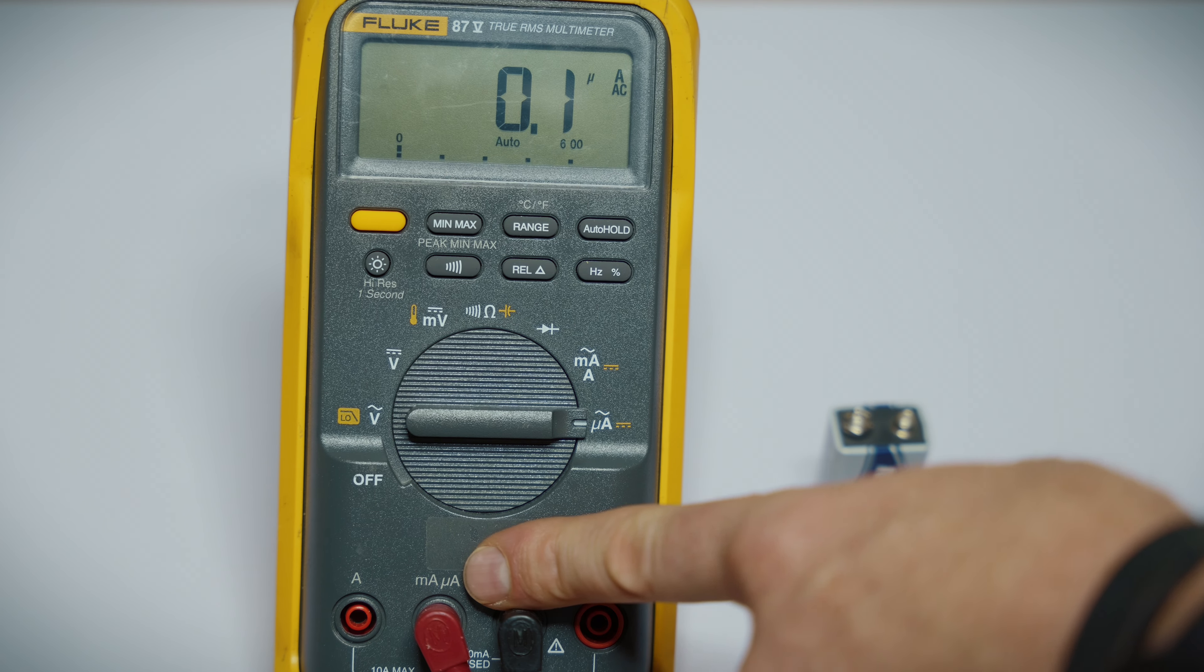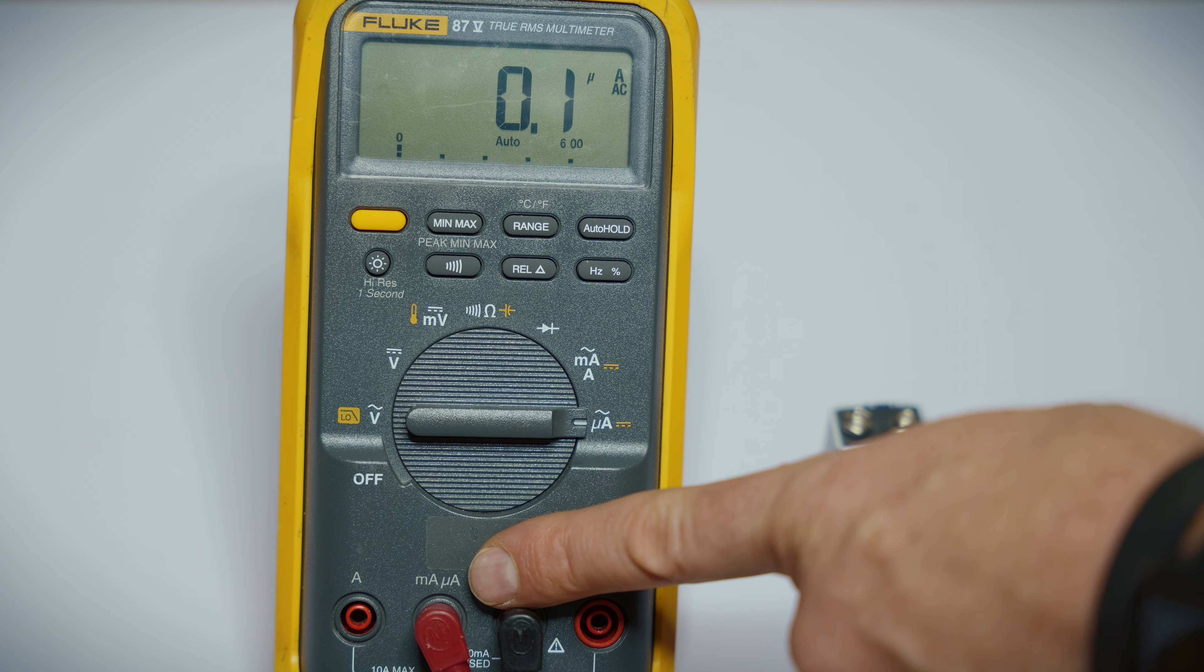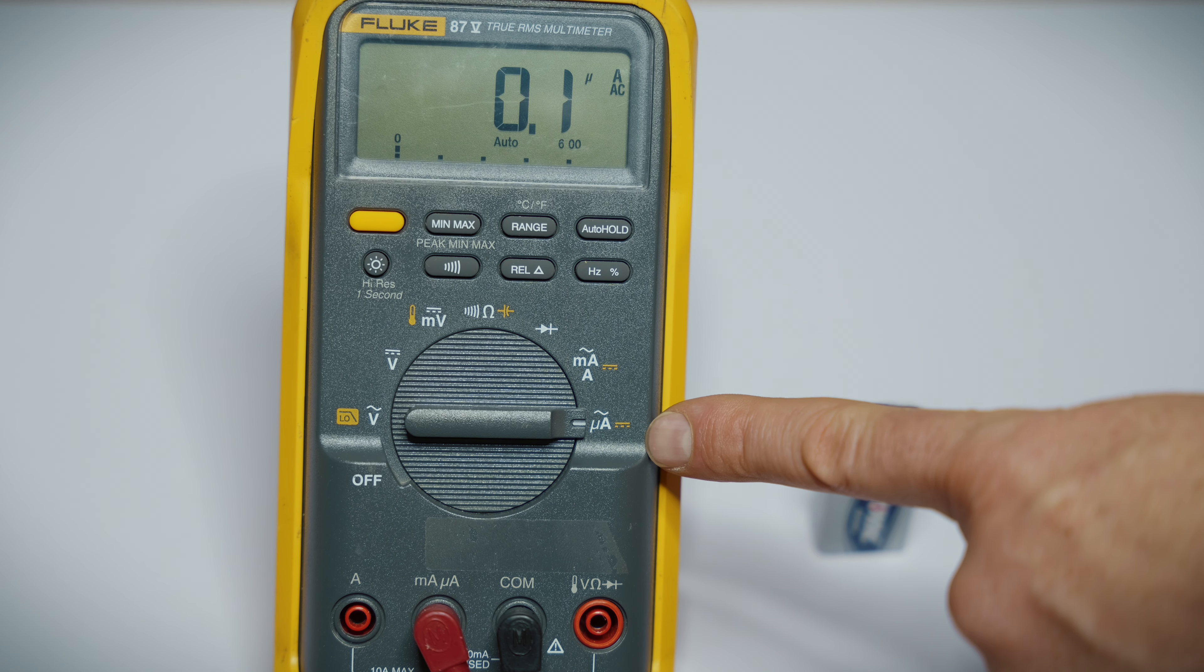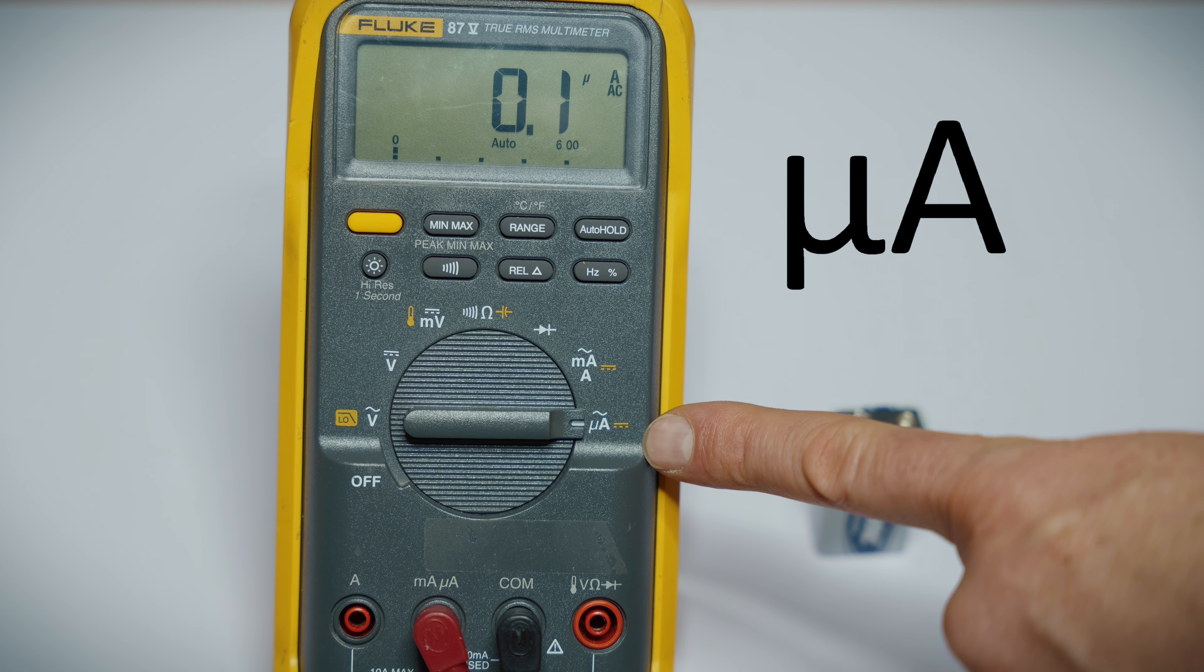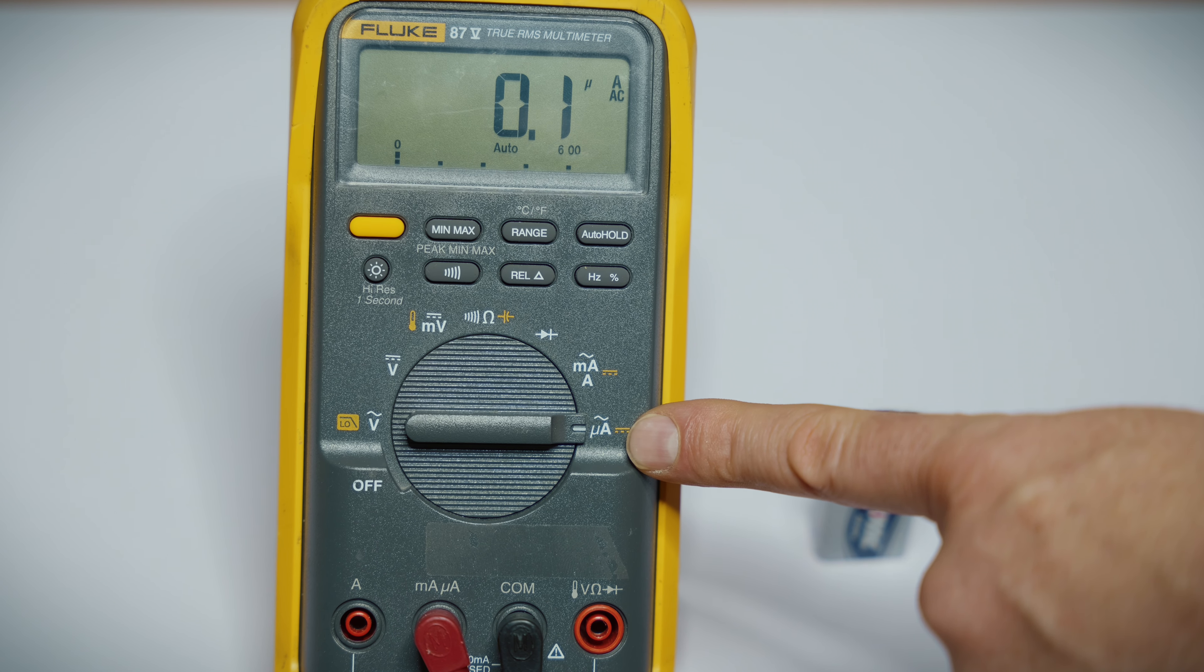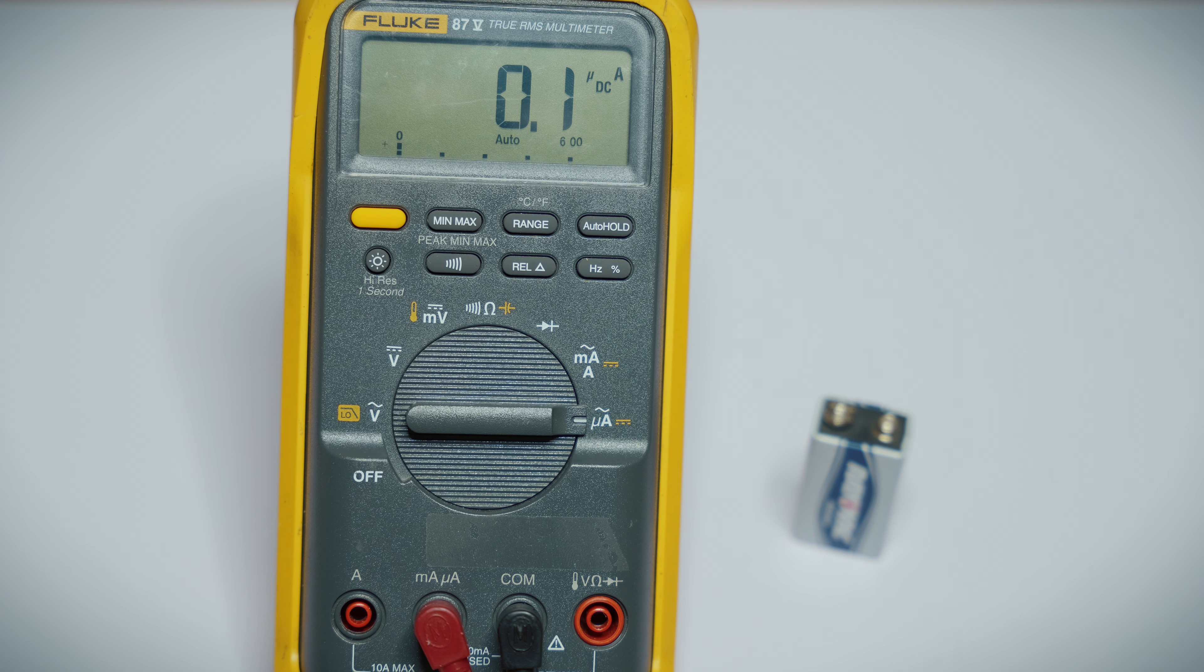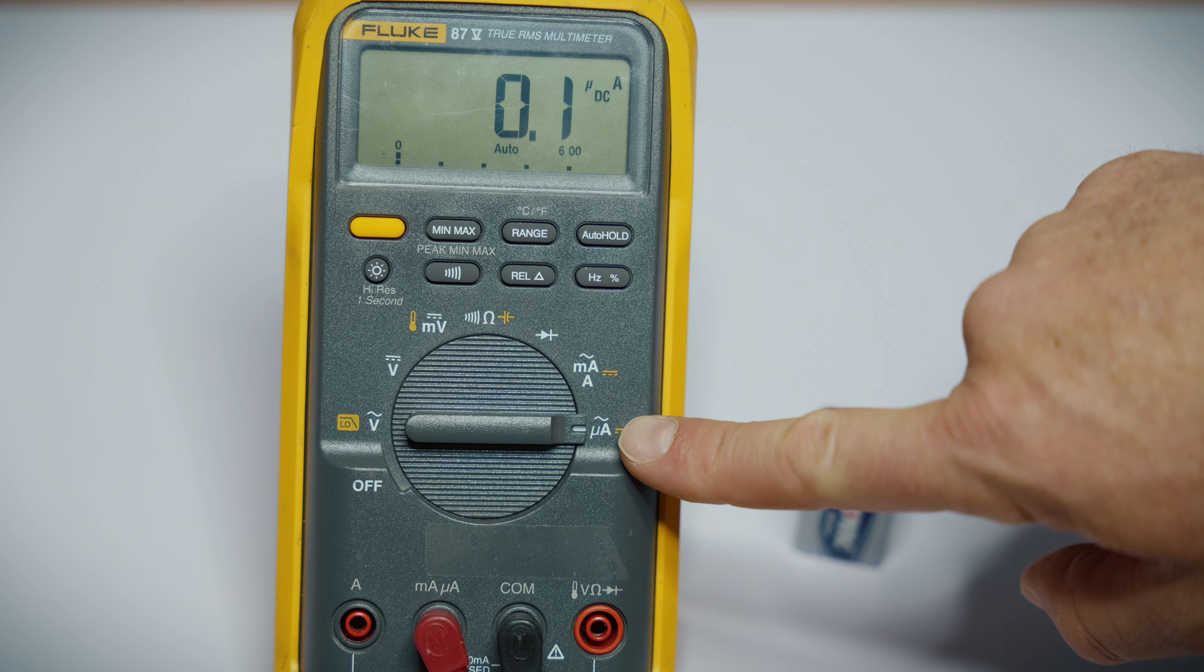Now the last setting that we're going to talk about today is the micro. And you can see the meter is actually warning me, I'm in the wrong socket. So now that I'm in the micro amps socket, it stopped beeping. So that's a handy feature on this meter. It will let you know if you've got it plugged into the wrong port when you're checking micro amps. That's because if you were to hook that up to a much higher amperage, it potentially could ruin your meter.